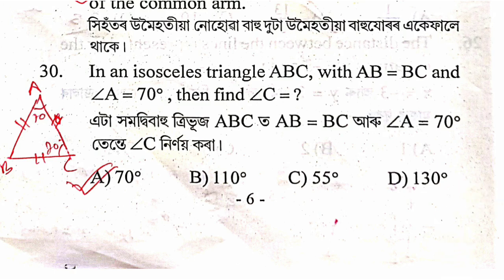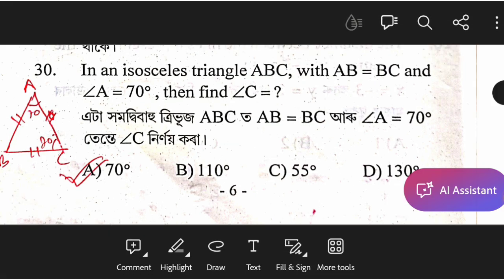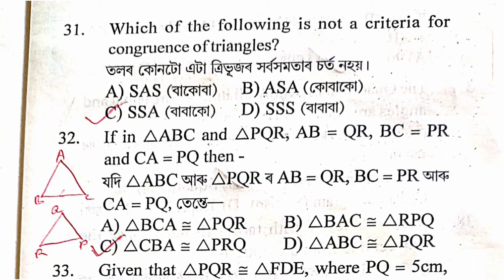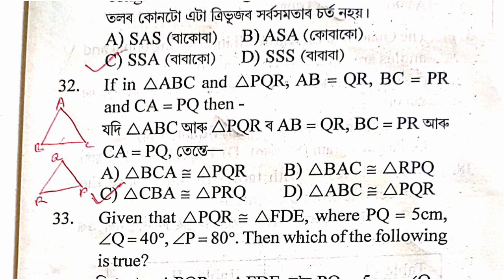Question 32: triangles ABC and PQR are congruent where AB = QR, BC = PR, and AC = PQ. The correct congruence is triangle ABC ≅ triangle PRQ, option B.